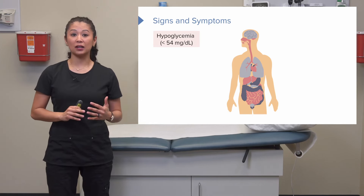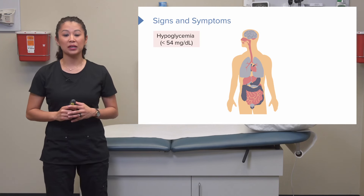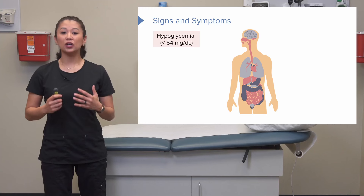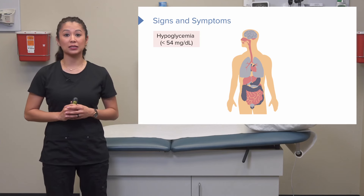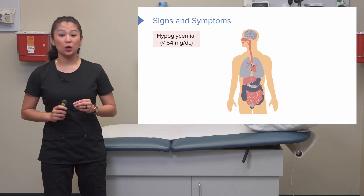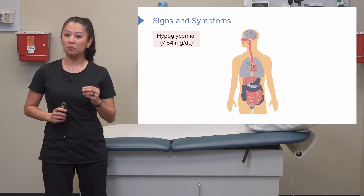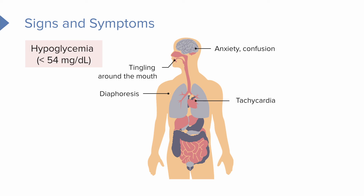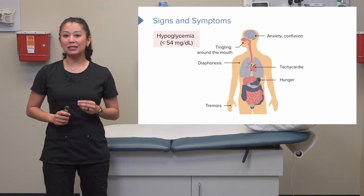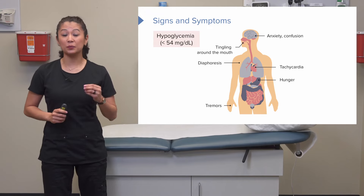Now let's talk about hypoglycemia. Depending on your agency's protocol, it could be defined as less than 70 or less than 54 milligrams per deciliter. When a patient has hypoglycemia, they're much more likely to show symptoms, such as anxiety, just not feeling right, confusion, tingling, diaphoresis or sweating and getting clammy, tachycardia or fast heart rate, hunger, or even shakes and tremors. Hypoglycemia is typically much scarier for you as a nurse and has to be treated quickly.